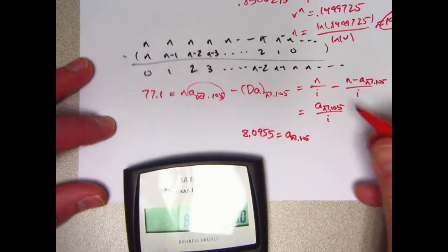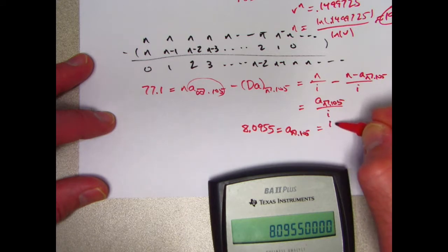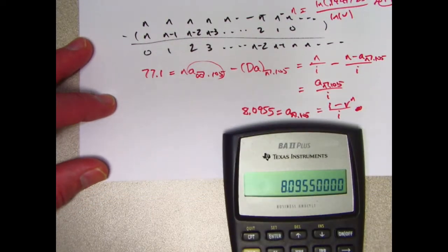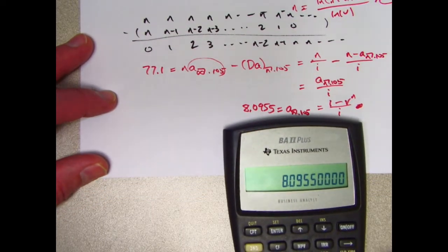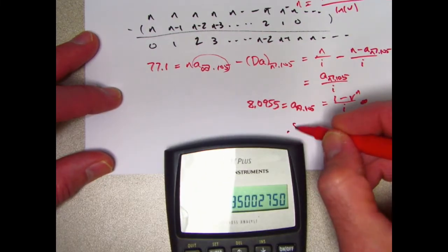But what is AN? It's 1 minus V to the N over I. So I end up multiplying by I again, ultimately meaning I was really multiplying by I squared. So multiply 8.0955 by I again times 0.105. And you get the exact same equation from the previous method that we solved up here.